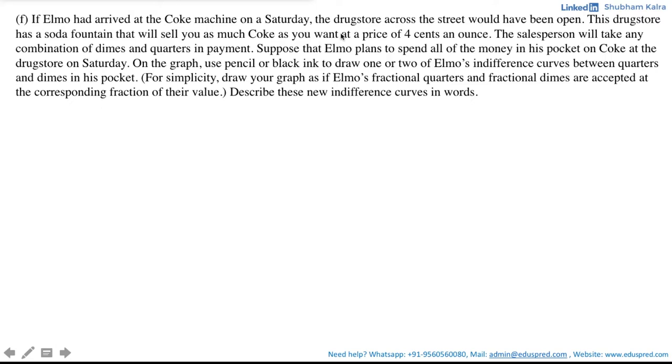Let's first see what information is given in the question. The price of Coke is 4 cents an ounce. Also, the salesperson will take any combination of dimes and quarters in payment, which means there is no longer the restriction on combination, which was earlier there in the question, which said that the machine would only accept two quarters and one dime. Hence, that proportion is no longer to be maintained, which means the goods are no longer perfect complements.